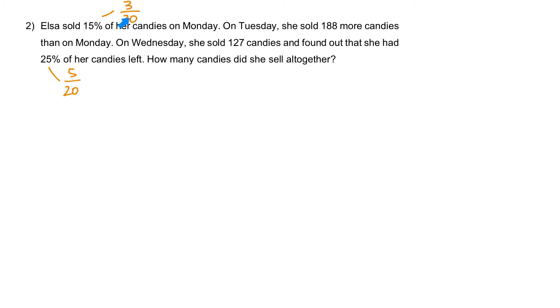Elsa sold 3 units out of the entire 20 units of her candies on Monday. Let me draw the model. On Monday, she sold 3 units. And on Tuesday, she sold 188 more candies than on Monday. For Tuesday, we're going to not only she sold this number, but 188 more. So probably 188, we can write it as this. Next, on Wednesday, she sold 127 candies.